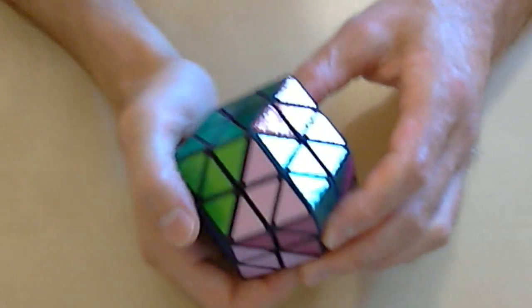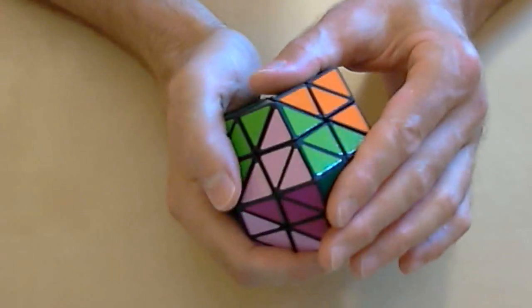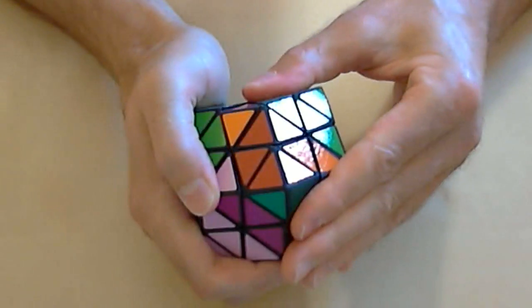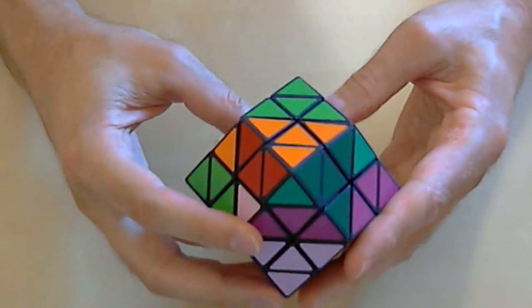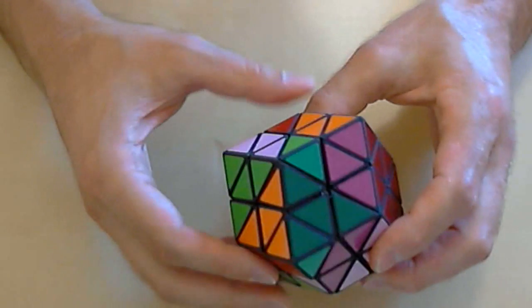Of course, rhombic 18 can also turn at the faces. Normal face turns are 180 degrees. Combining these two types of moves can allow the puzzle to be thoroughly scrambled.